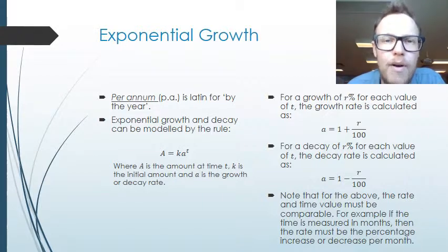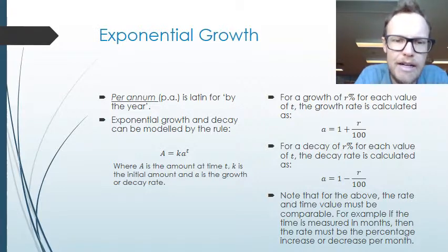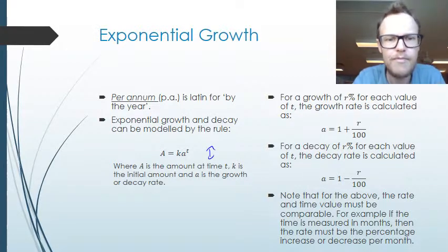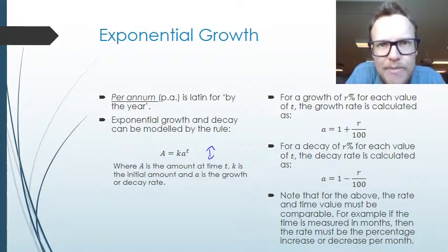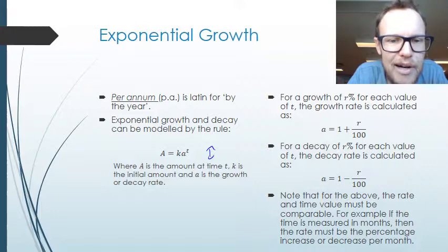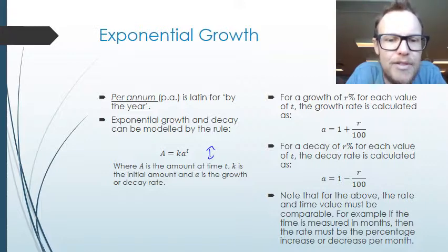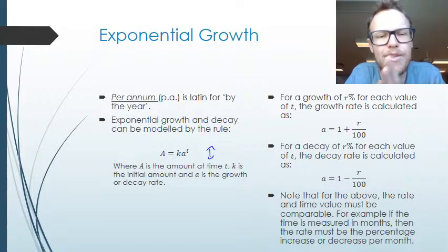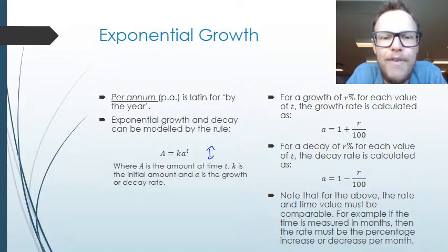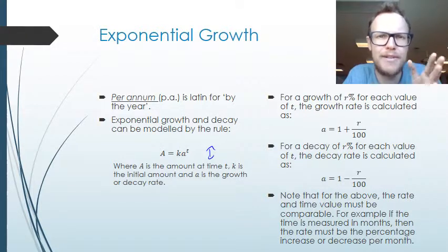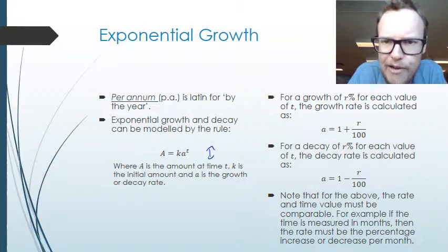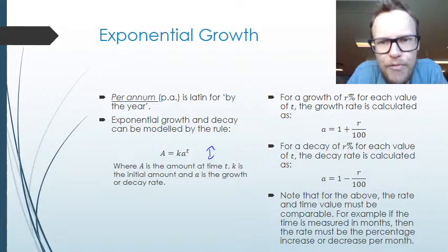We can model exponential growth and decay using this general form: A is equal to K times a to the power of T. A is the amount at the time we're talking about — after so many years. K is the starting amount, the initial value. A is the growth or decay rate, and T is the time period we're interested in after the initial value has been established.